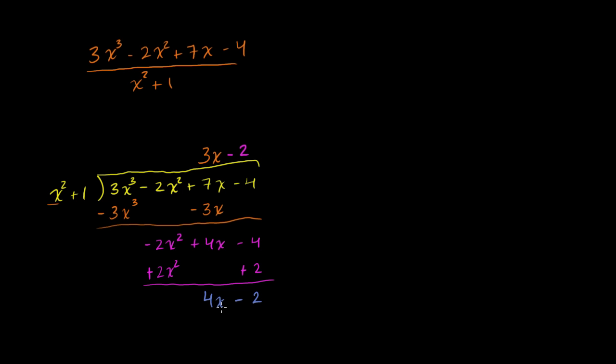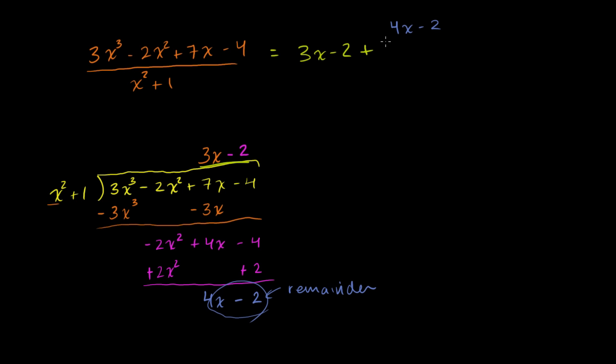Since x squared has a higher degree than 4x, we view 4x minus 2 as the remainder. So this expression can be rewritten as 3x minus 2, plus the remainder 4x minus 2, all over x squared plus 1. Hopefully you found that as fun as I did.